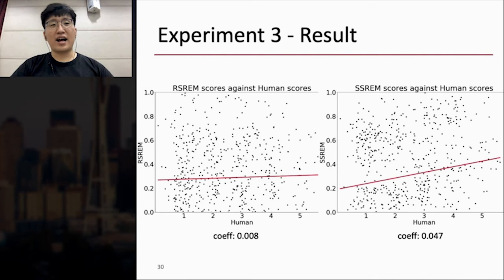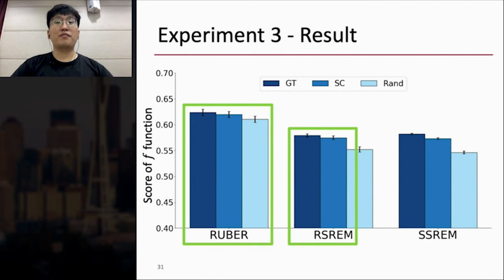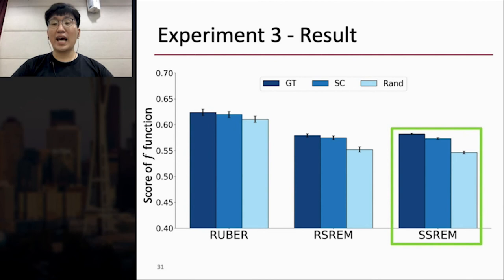And this is the result of identifying true and false responses experiments. RUBER and RSREM perform poorly on distinguishing between ground truth and false responses, but SSREM outperforms the other two models for identifying all cases statistically significantly.